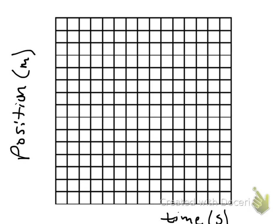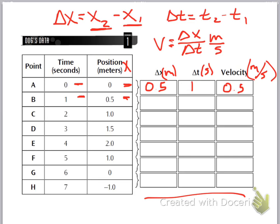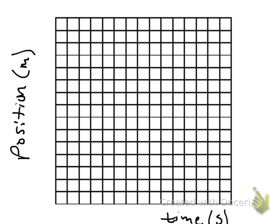That first graph is a position versus time graph. Basically all you're doing is plotting what's in the position column — all of that position data — and plotting it versus time. Notice how there's nothing on the legend — nothing on the axes. You've got to figure out how to label those.